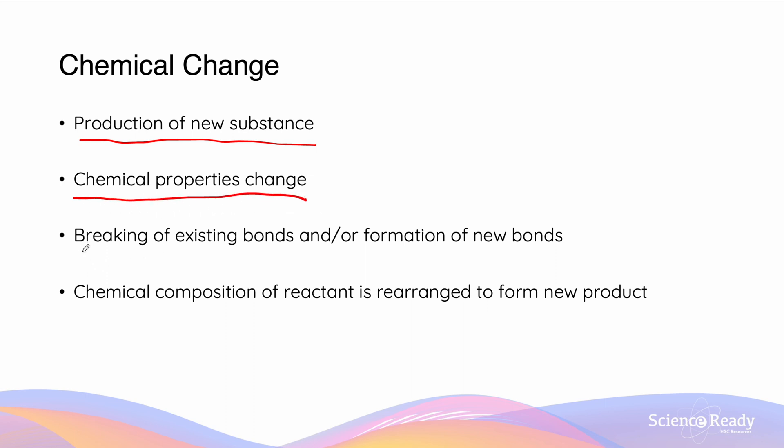There occurs to be the breaking of existing bonds and or the formation of new bonds. And these bonds we commonly know as the intramolecular bonds. They can either be covalent or ionic. The chemical composition overall of the reactant is going to be rearranged to form a new product.